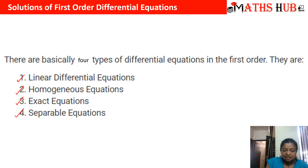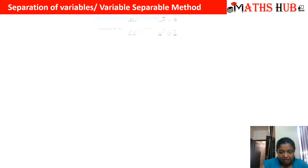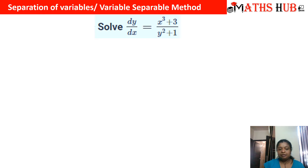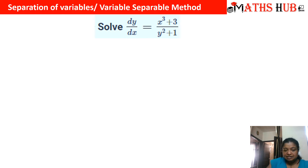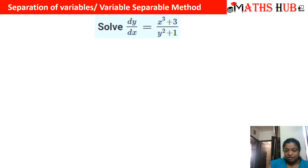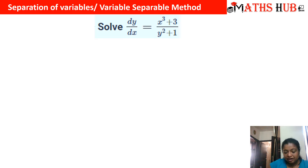We will be discussing the separable equations today — we will start from the back. The variable separable method says that we have to separate out the variables on both sides. There are two variables: x is the independent variable and y depends on x. We will be separating the variables of y on one side and the variables of x on the other side.